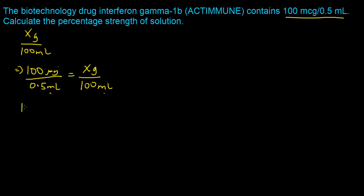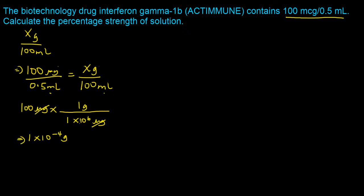We do a quick conversion: take the 100 micrograms and use the fact that 1×10⁶ micrograms is equivalent to 1 gram. The micrograms cancel out, giving us 1×10⁻⁴ grams. We now have the 100 micrograms expressed in grams, and we can put that back into our proportion: 1×10⁻⁴ grams out of 0.5 milliliters equals x grams divided by 100 milliliters.